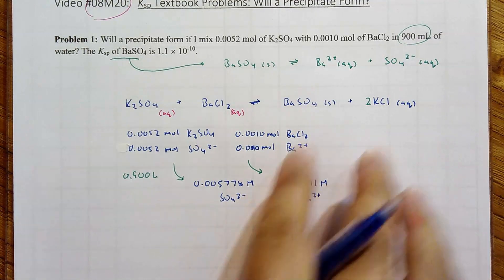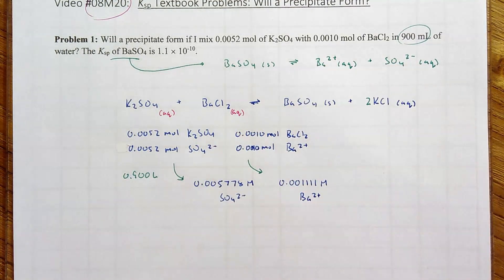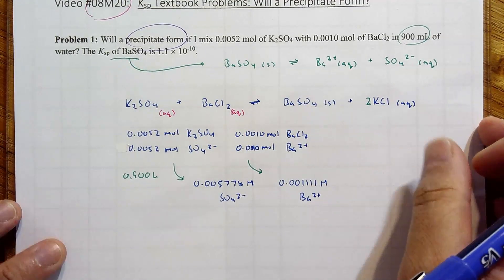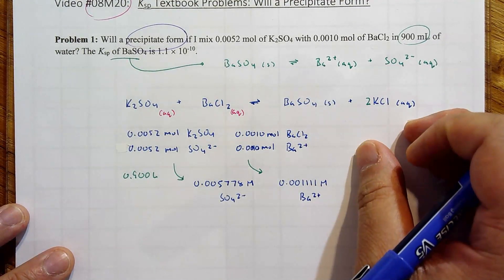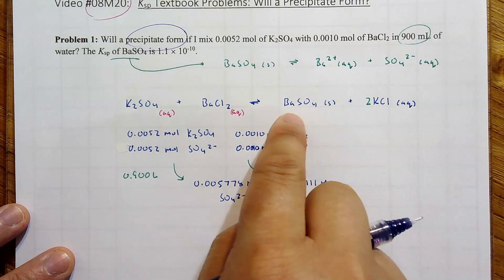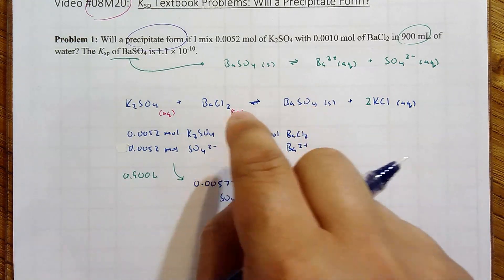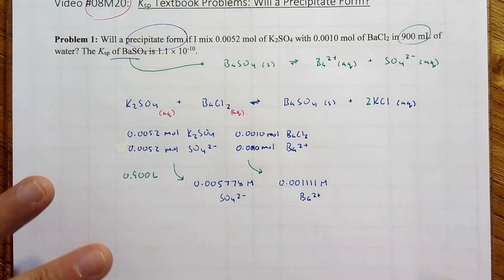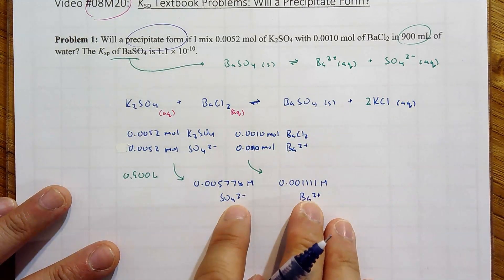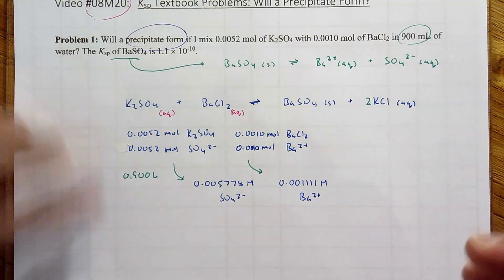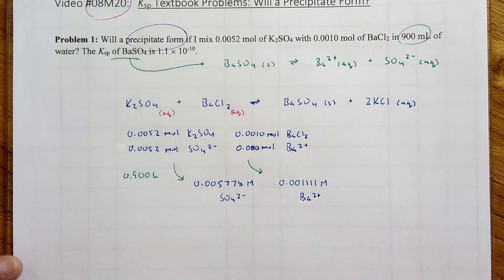Now this one is kind of sloppy. 0.0010 divided by 0.9. And here we have 0.001111 molarity or molar of Ba²⁺. So literally, that's what's going into the expression. Now when they ask will the precipitate form, what are they really asking? They're really asking, does the reaction go more to the forward direction or more to the reverse direction?